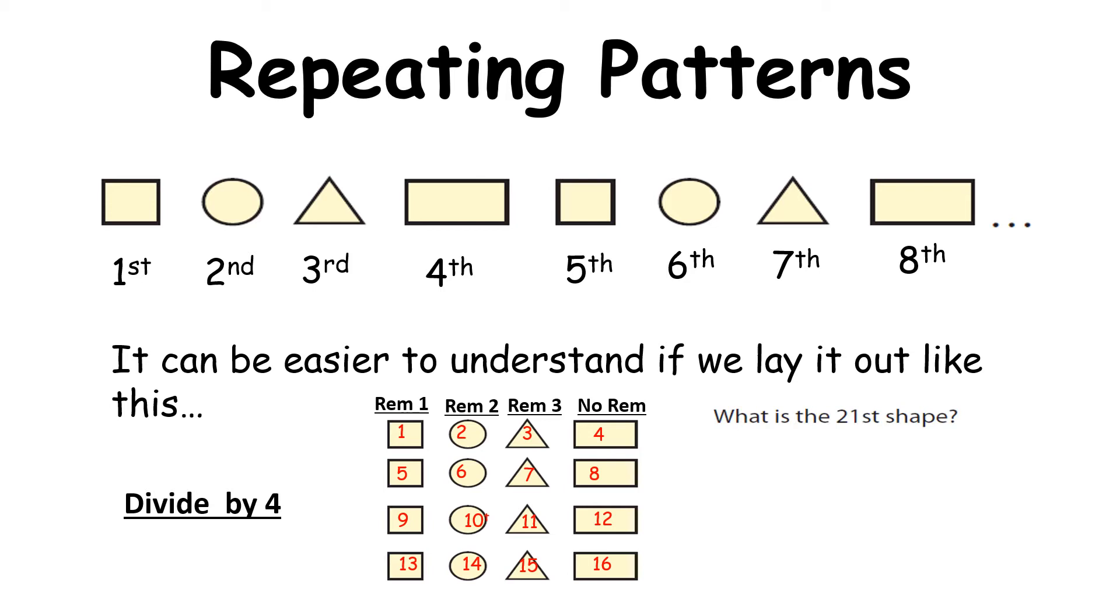So what is the twenty-first shape? So let's use this method. Twenty-one divided by four is going to give us five remainder one. I'm just going to use R1 for remainder one. So we're really going back to maybe something you haven't seen since primary school. Gone are the decimals. We're talking remainders here. Remainder one means we're talking about the first shape which is a square. Then what is the thirty-seventh shape? So let's do the same thing. Thirty-seven divided by four. When we do this we get nine, again remainder one. So that shape is a square.